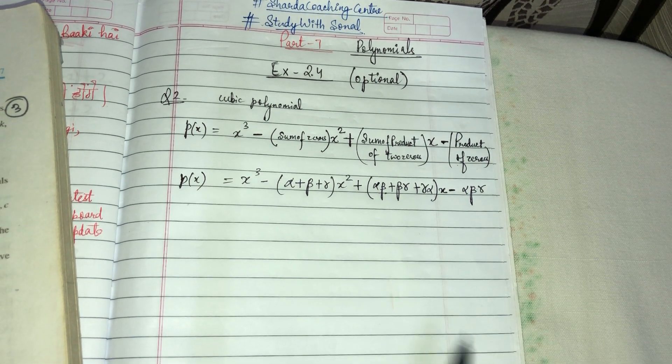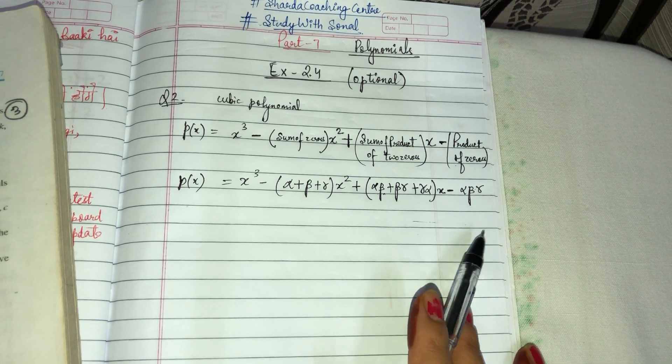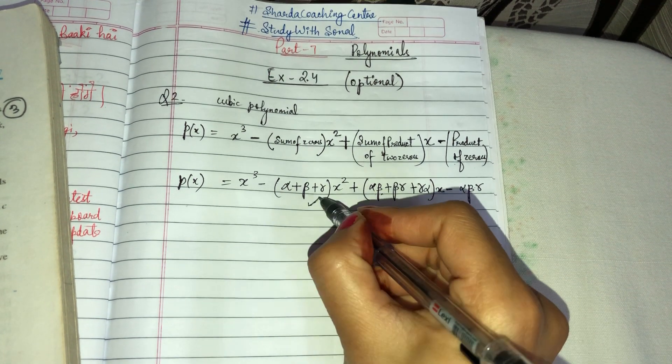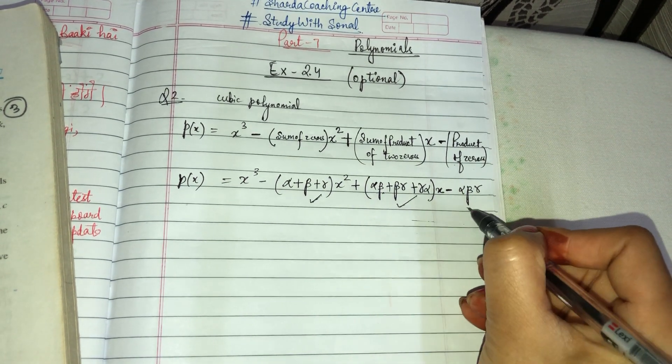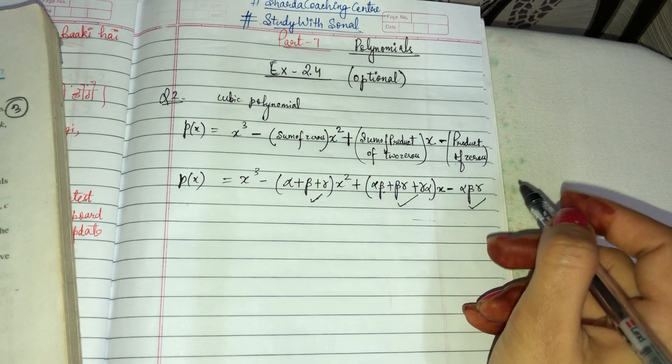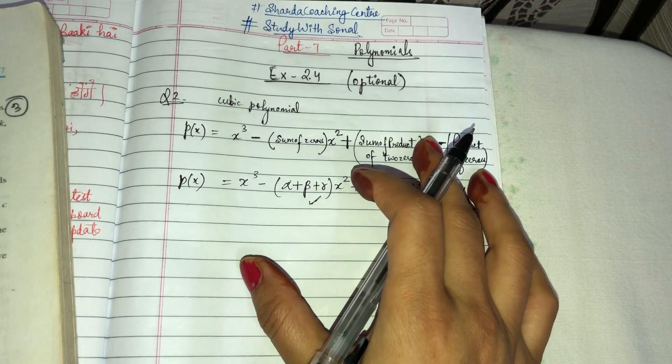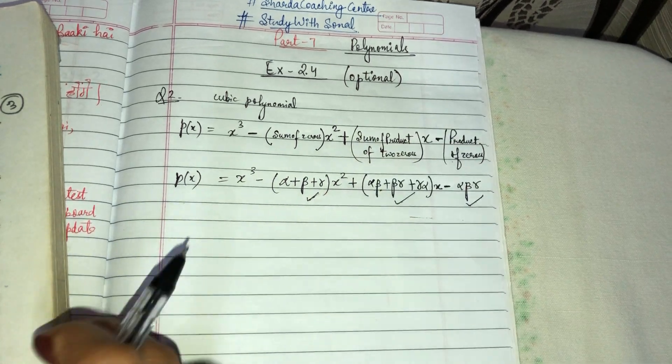The product of zeros is alpha·beta·gamma, so minus of that. This is a cubic polynomial. If you know these three things, then you just have to put in the answer. Let's see.